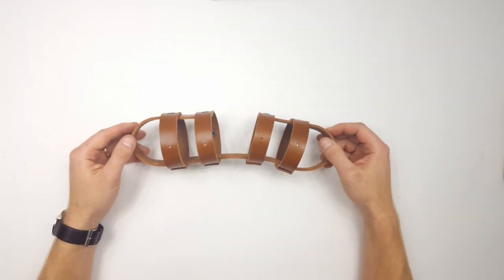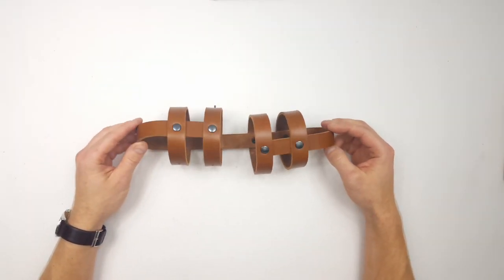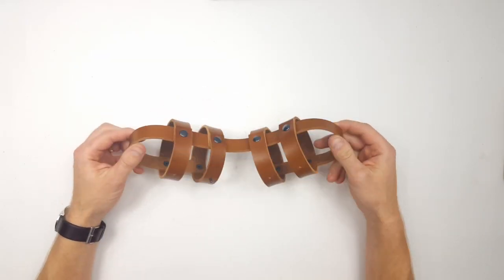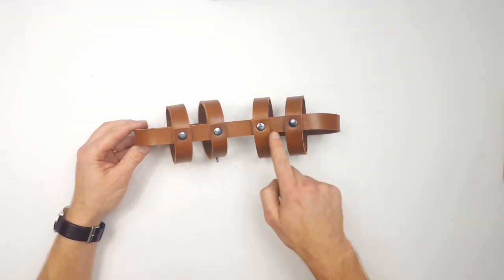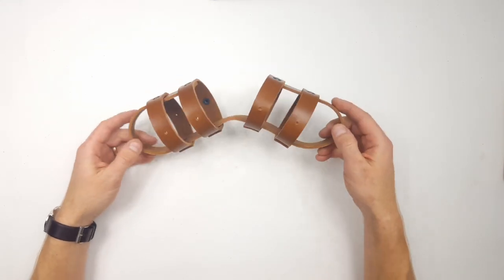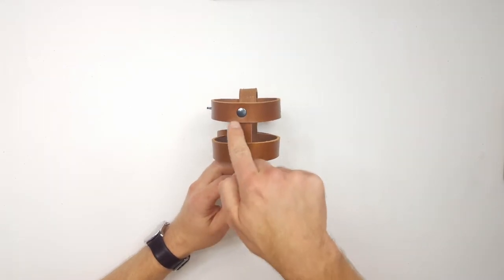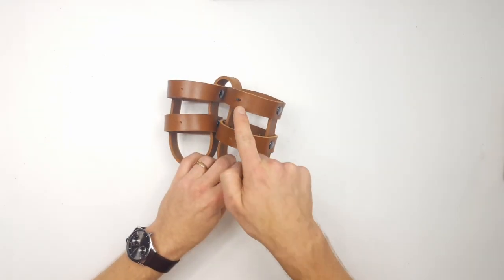Now you should have something that looks like this. The middle part has now been riveted together on the front, and on the back where you have the long rivets. Since this is going to be the middle part, you need to add rivets from the inside, poking out like so.